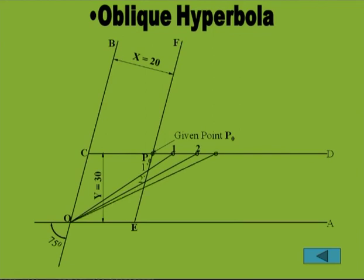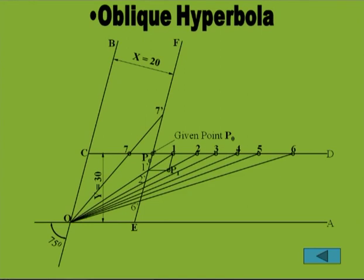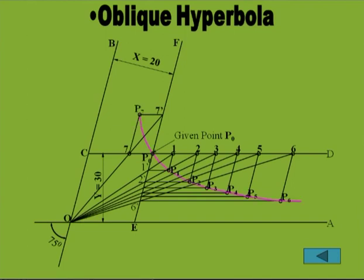Taking the first line drawn from O: it intersects the vertical line at 1-dash and the horizontal line at point 1. Drawing a horizontal line from 1-dash and a vertical line from point 1, wherever these two intersect gives a point on the hyperbola. Draw a smooth curve from all the obtained points — that is the oblique hyperbola, where OA and OB are at some angle and not at a right angle.